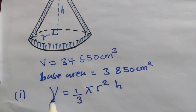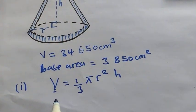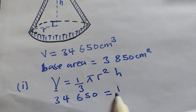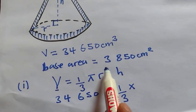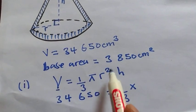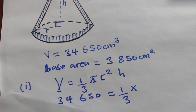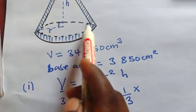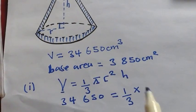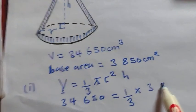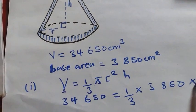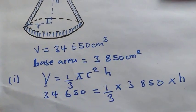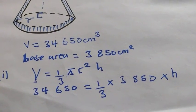To find the internal height H, you write the formula for volume of a cone: V = (1/3)πr²h. Where you have volume, equate it with the given internal volume of 34,650. Now, πr² is the base area, and the internal base area given is 3,850. So where there is πr², we put 3,850, and where there is h, you just put h since we don't have the value for h.